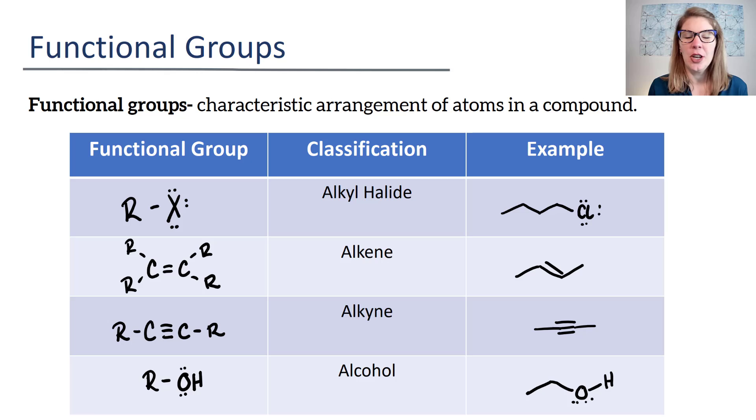This first page of functional groups shows an alkyl halide. An alkyl halide is something that has a carbon-hydrogen group, which is an R, and then attached to that is a halogen. When we abbreviate halogens, we usually abbreviate them as X. For an example of an alkyl halide, I've drawn an R group over here and then a chlorine to show that this is an alkyl halide.